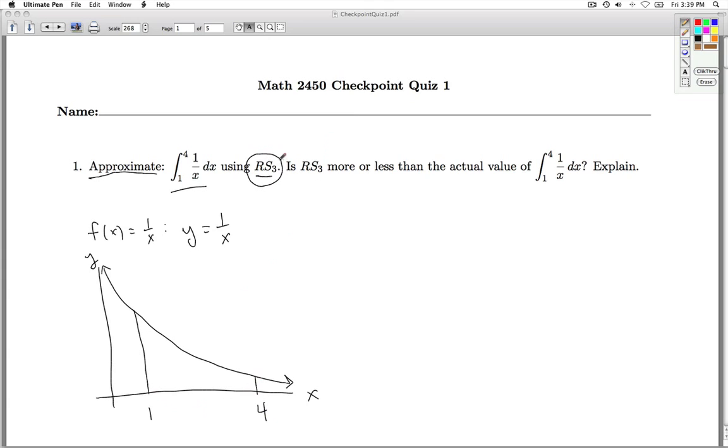We're asked to find RS3. RS3 is the right endpoint sum with three subdivisions. So the entire interval is from 1 to 4 that has a length of 3.